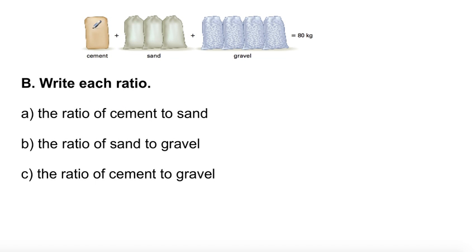So we have one cement, okay, and that's how you communicate a ratio. Cement to sand. How many? One, two, three. Three. Sand.